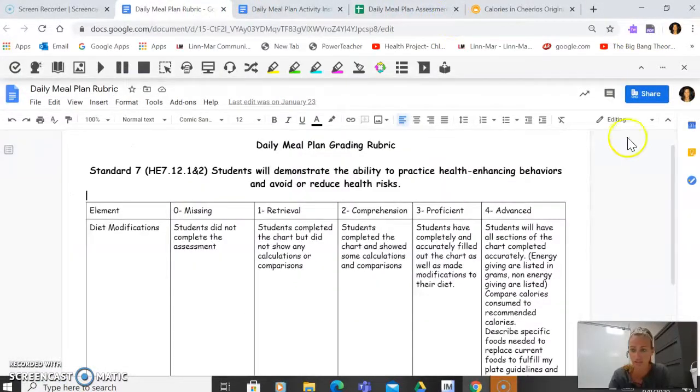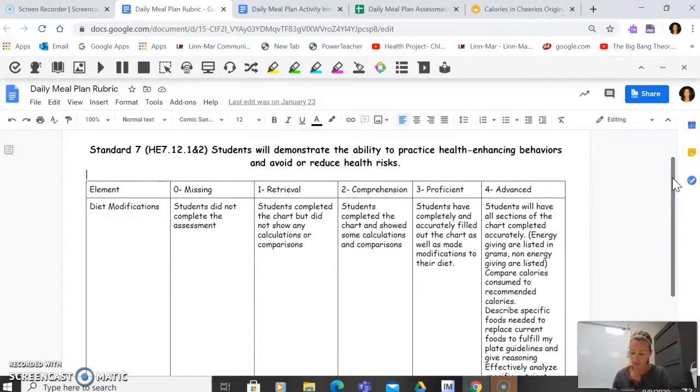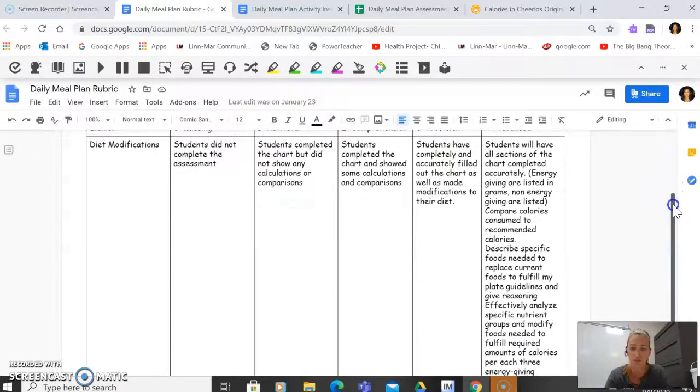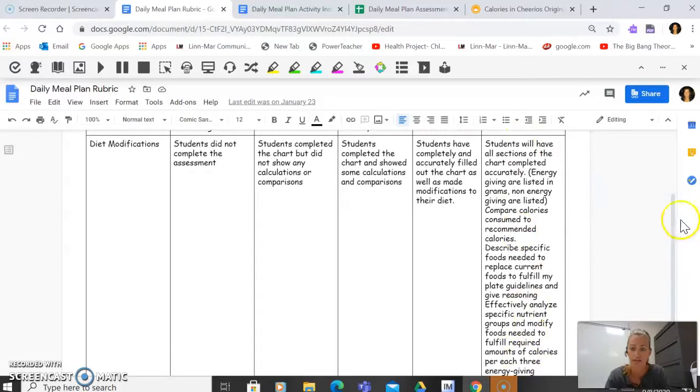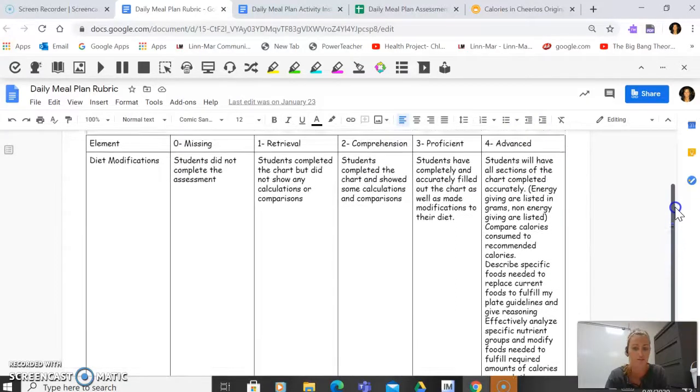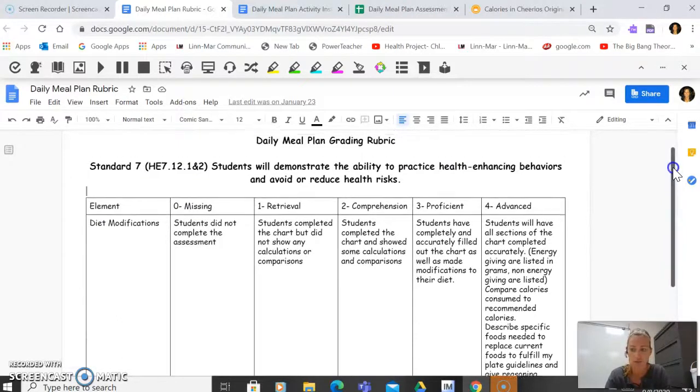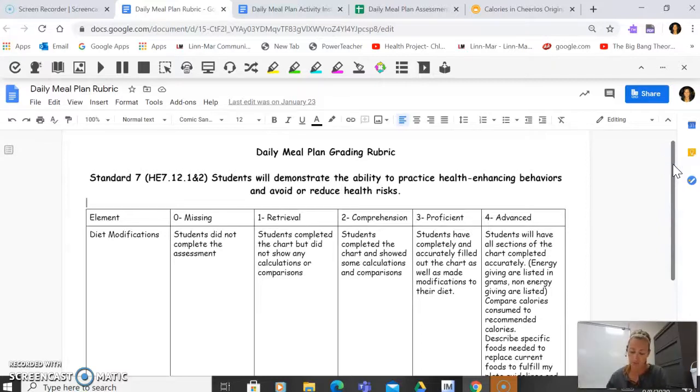If you want to see the rubric, it is posted in lesson four with all of the other links for the daily meal plan assessment. And in order for you to get a level four, you need to read through here and have fulfilled everything that is listed on there. If you have questions on this assessment, we are going to have class time to work on this tomorrow. We'll start the day off with questions, any questions that you have on how to complete this. Thanks for joining us.